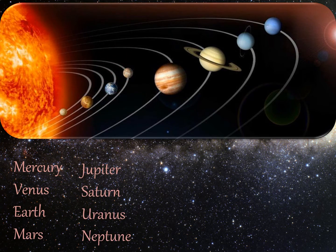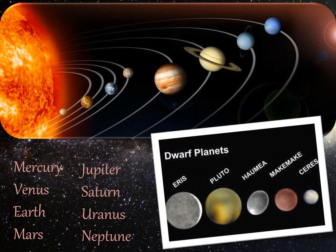Uranus and Neptune. The 5 dwarf planets of the solar system are Eris, Pluto, Haumea, Makemake, and Ceres.